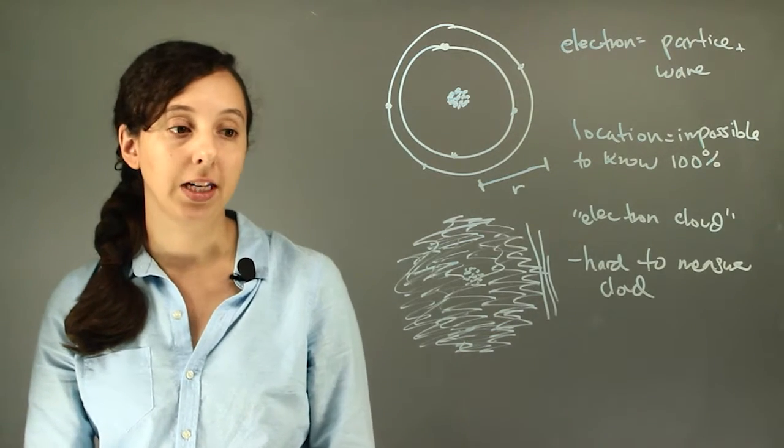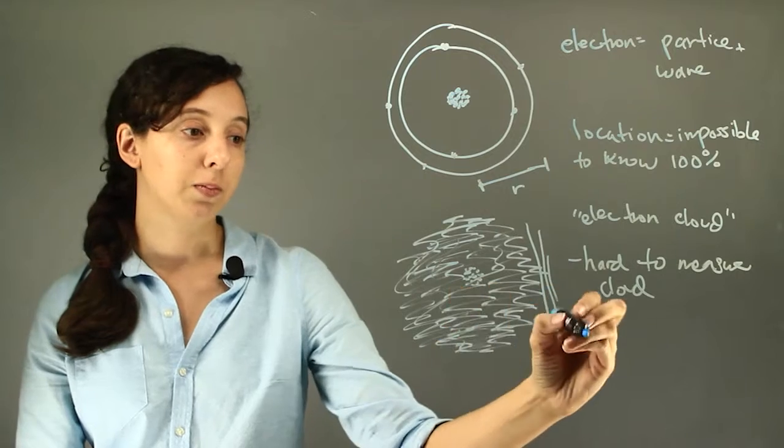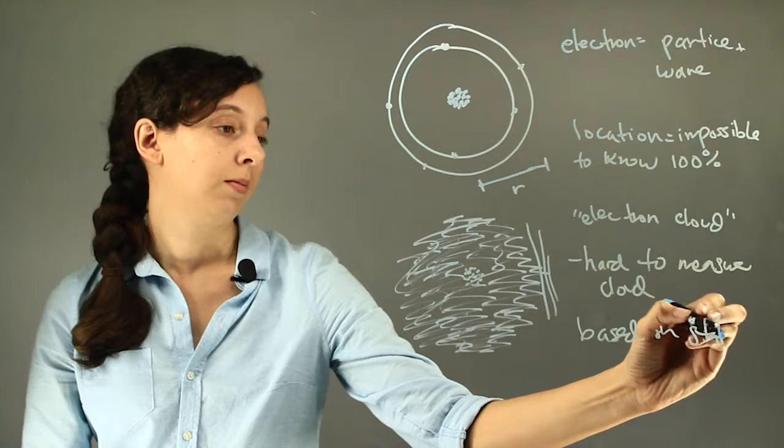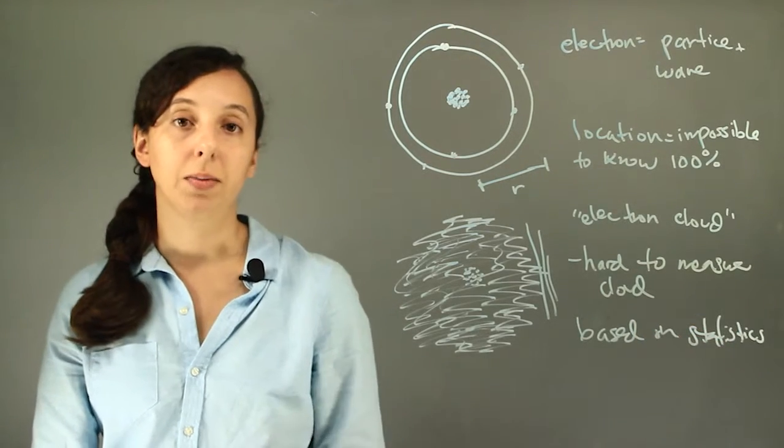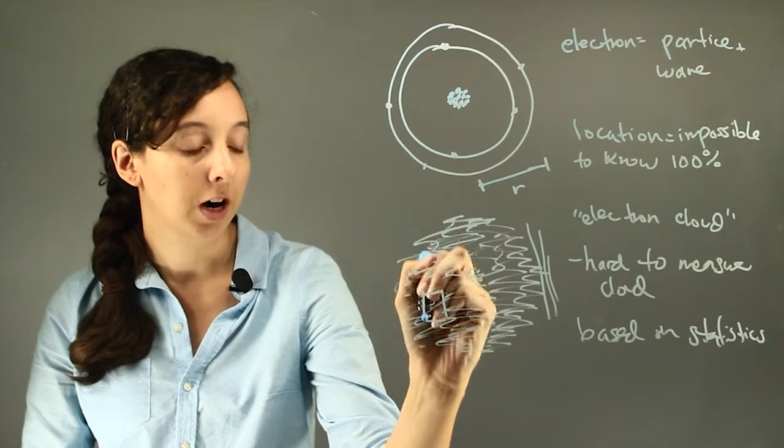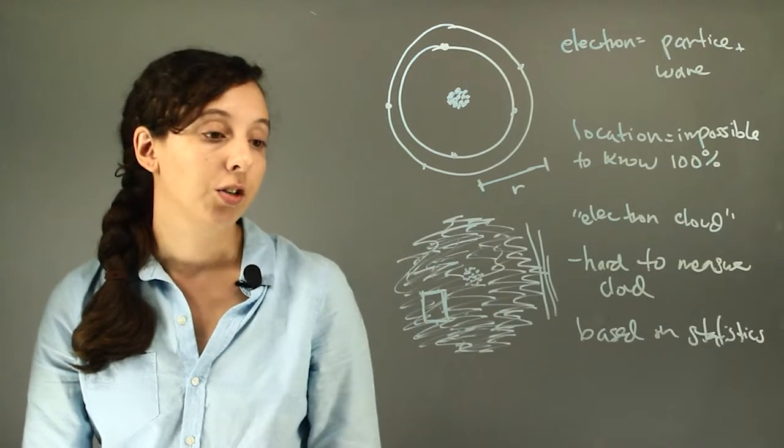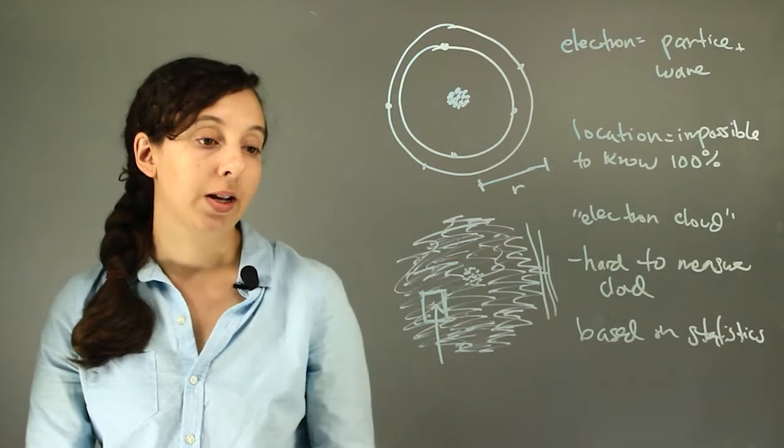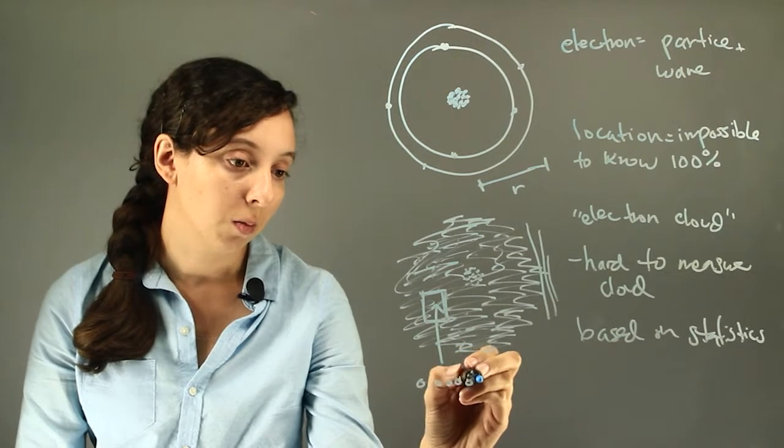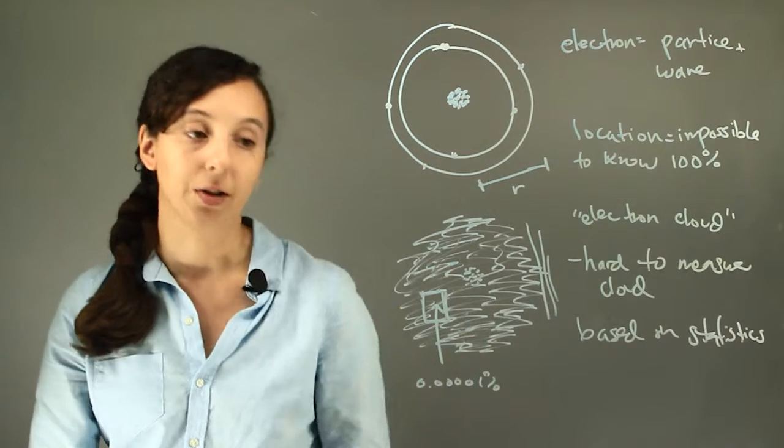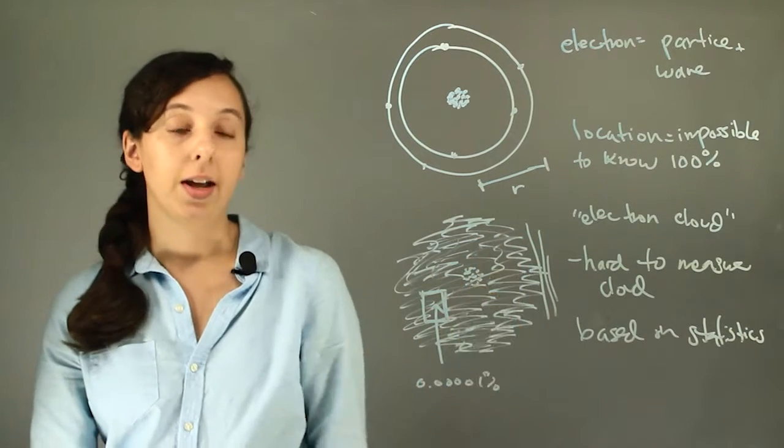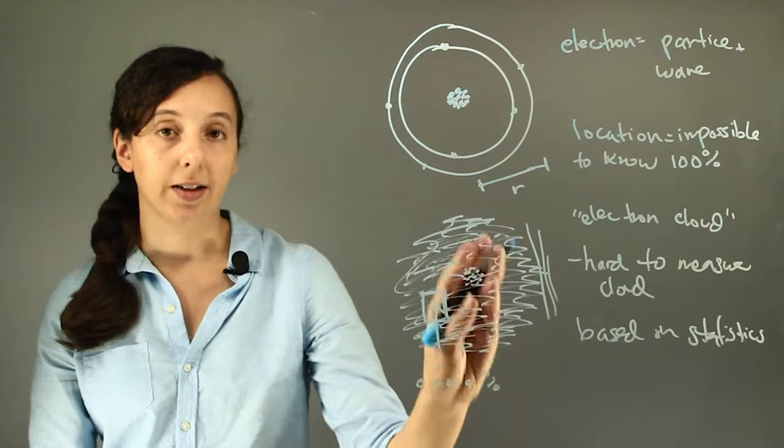And then the second thing to remember is that even this electron cloud is just based on statistics. Which means that if you look into just a little tiny cross section of a specific part of an atom or electron cloud, you'll find maybe that the atom at that moment, the electron cloud has a 0.00001% chance of being in this exact location. And then you add up all of the different percentages around here, and then you eventually model all your data to make an electron cloud.